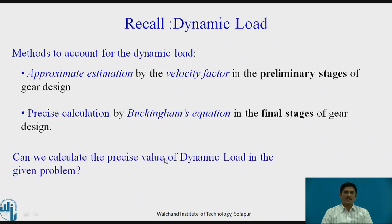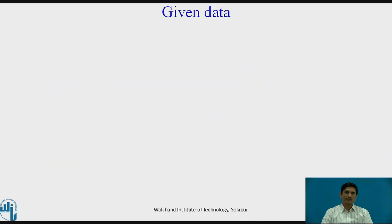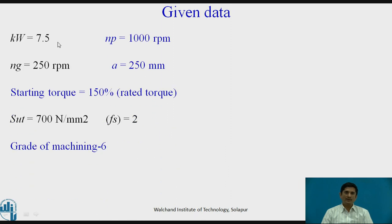Can we calculate the precise value of dynamic load in the given problem? Think upon it. Look towards the given data. The power to be transmitted is 7.5 kW. Speed 1000 RPM of pinion, gear 250 RPM. Centre distance is exactly 250 mm. Starting torque equals 150% of the rated torque. CS is 1.5. SUT equals 700 N per mm square and factor of safety is 2. Grade of machining is 6. Then let us begin with the problem.